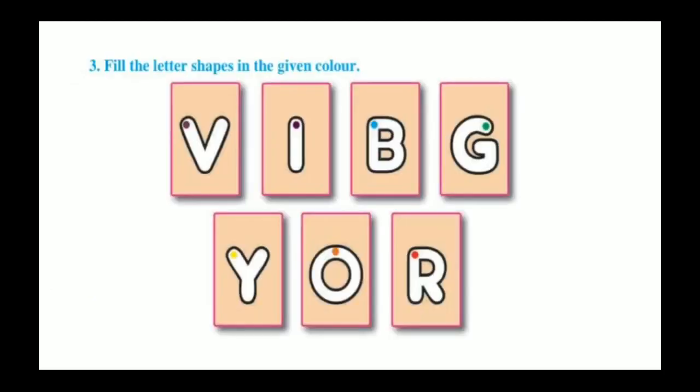Now fill the letter shapes in the given color. Now here, V stands for Violet, I stands for Indigo, B stands for Blue, G stands for Green, Y stands for Yellow, O stands for Orange, R stands for Red.